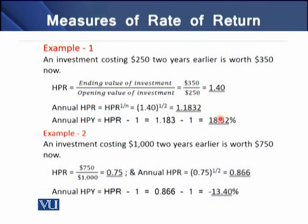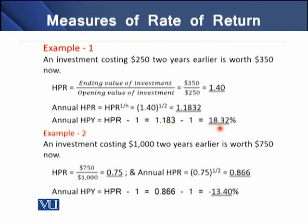Consider an investment costing $250 two years earlier that is now worth $350. To determine the holding period return, we divide the ending value of 350 by the opening value of 250, giving a holding period return of 1.40. To annualize this over two years, we raise it to the power of one-half, giving 1.1832 — the annualized holding period return. Deducting 1 from 1.1832 gives an annualized holding period yield of 18.32 percent per annum.